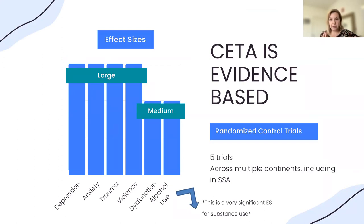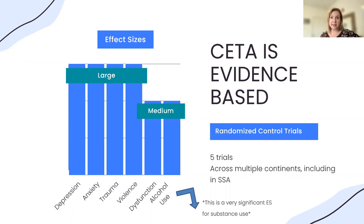Just a quick brief on CETA's evidence: we've done over five randomized control trials and have several still going now. Across those trials, we use lay providers with grade eight to twelve education. Through these studies, we found pretty significant results across a range of variables with large effect sizes for mental health symptoms and violence, as well as medium size effect sizes for dysfunction and alcohol use. There's a pretty wide range and solid proof that CETA is effective in impacting these different variables.